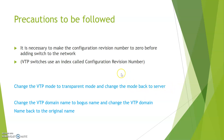This is one way to make the configuration revision number zero. Alternatively, we can change the VTP domain name to some irrelevant or bogus name and then change it back to the original name. In this way also we can make the configuration revision number zero.